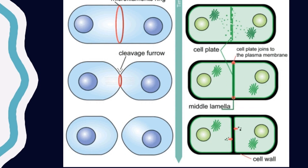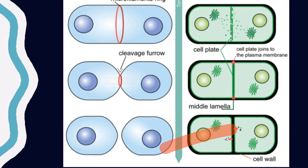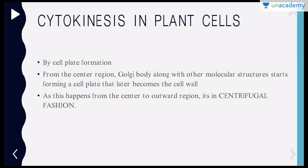The cell plate joins to the plasma membrane — this is basically the middle lamella, which further forms the cell wall. So the sequence is: cell plate forms at the center, then the middle lamella, then the cell wall layers are deposited, and the two parts separate. Because the process starts from the center and moves outward, this is called the centrifugal fashion of cytokinesis or cytoplasmic division. That's what happens in plant cells, and that is the key difference from animal cells.